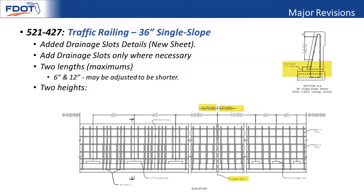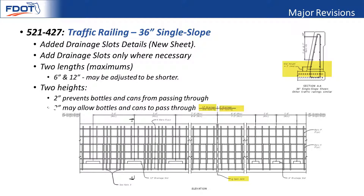We also allow for two heights: two inches, which won't allow the passage of cans and bottles, and three inches, which will. The height, length, and actual spacing need to be included in the plans — we don't want to just put them as close as possible willy-nilly everywhere. Please work with your drainage engineer on the size and spacing, and these drainage slots need to be added only when necessary.